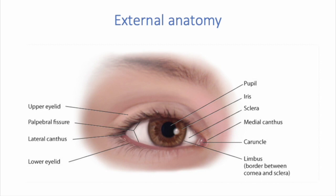The canthus is the corner of the eye — the angle where both lids meet. The medial canthus is located closer to the nose, and the lateral canthus is the lateral area of your face. In that inner canthus, you have a caruncle, which is that small fleshy rounded structure that contains a sebaceous gland.